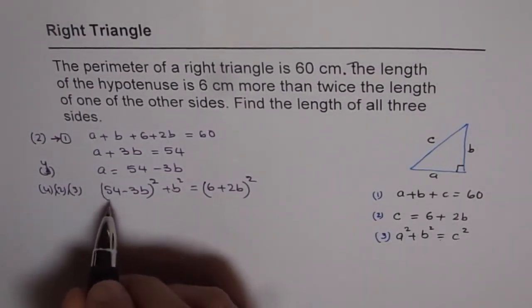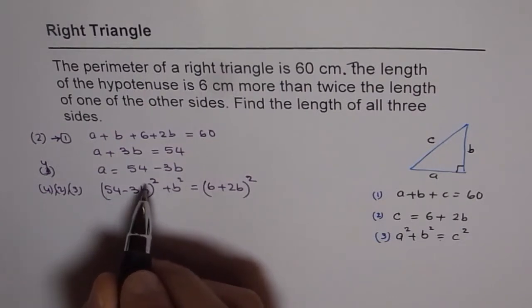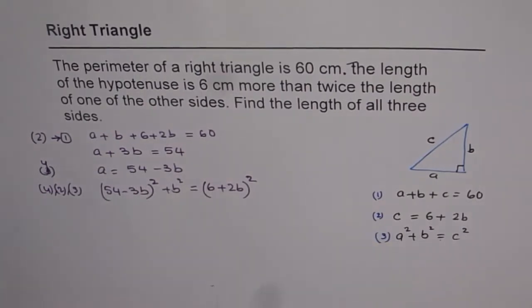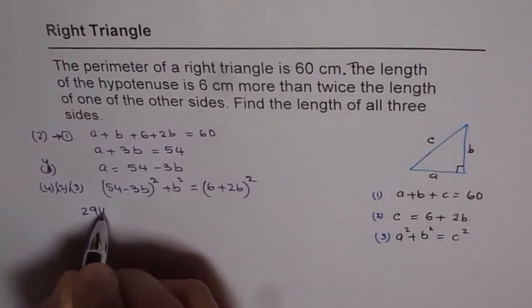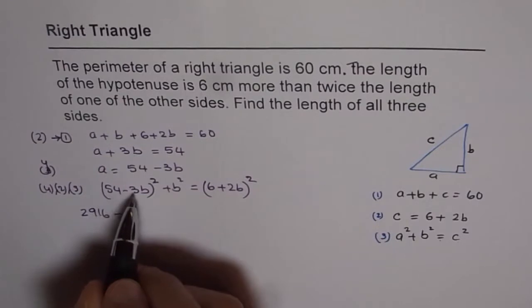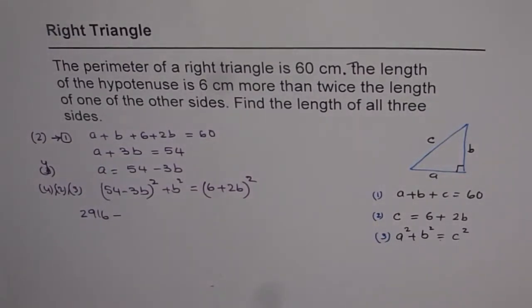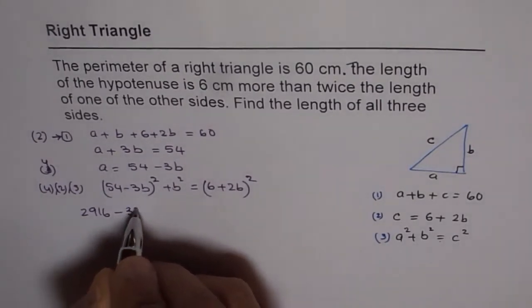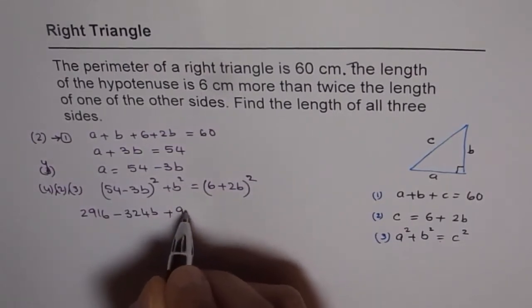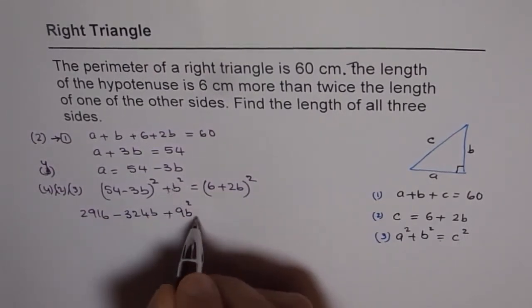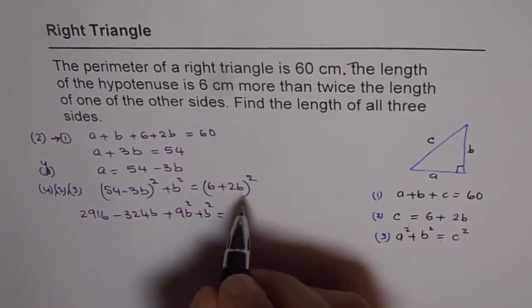Let's expand this. So we have 54 square, which is 2916 minus 2 times 54 times 3, that is 324b, plus 9b square. Now we have b square here and we will expand the right side.